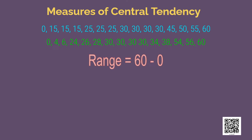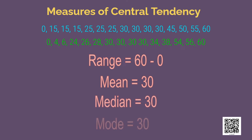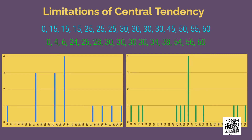Both these groups have the same range and equal mean, median and mode. You may not have thought that something like this could be possible, isn't it? Here is the visual representation of the numbers in both the groups. The height of the bars denotes the number of occurrences of each number. You can see how two different groups of numbers have the same range and equal mean, median and mode.